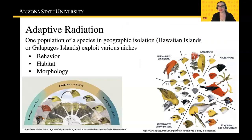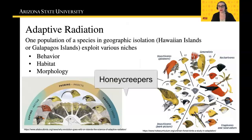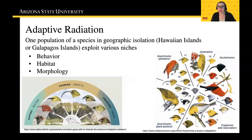One way we can identify allopatric speciation and geographic isolation is known as adaptive radiation. Adaptive radiation is easily seen with Darwin's finches, and we can also see it in the Hawaiian Islands with these amazing different bird forms. These birds have beaks that are all very specialized into their niche in their geographic isolation on the Hawaiian Islands.